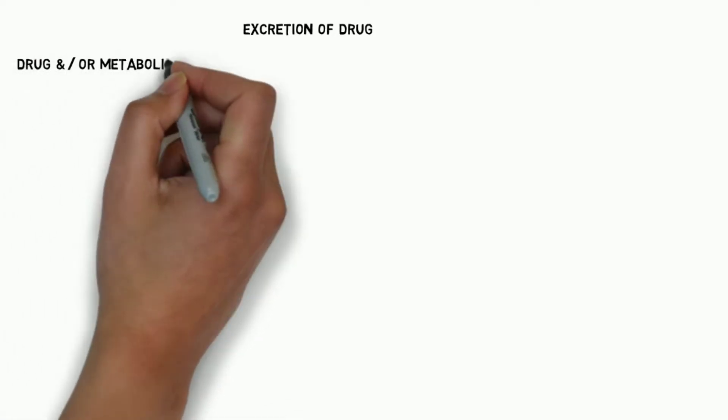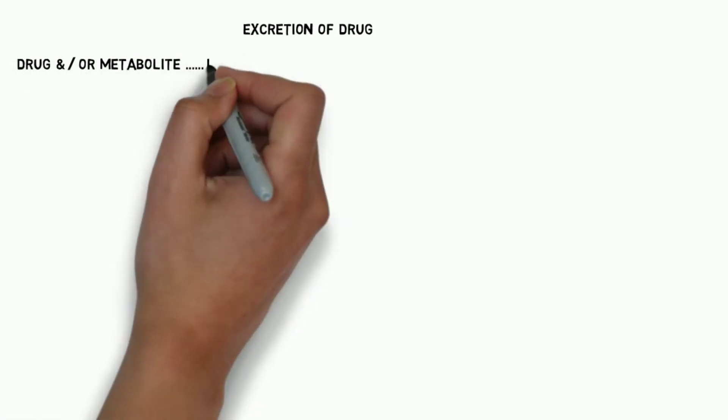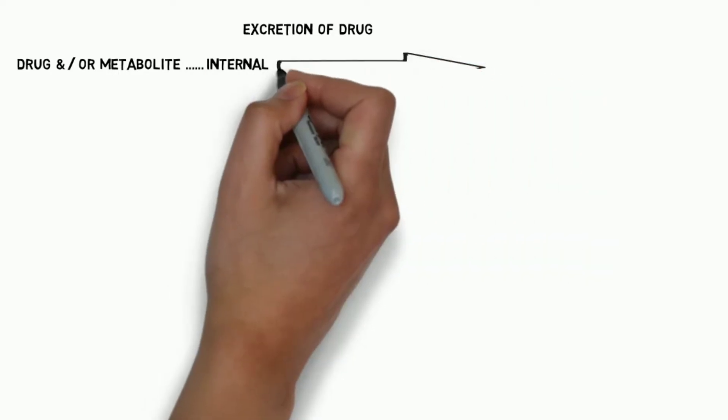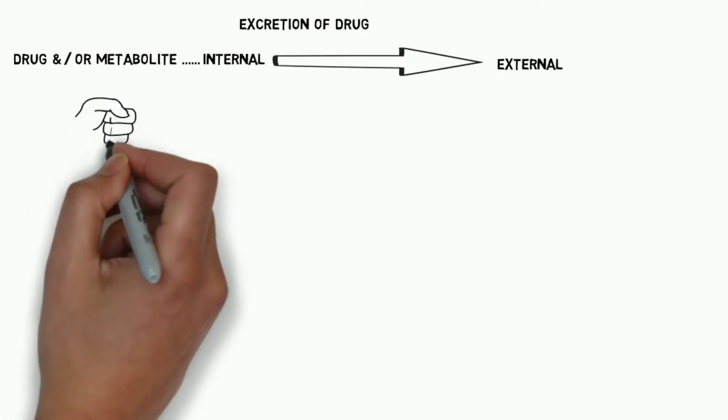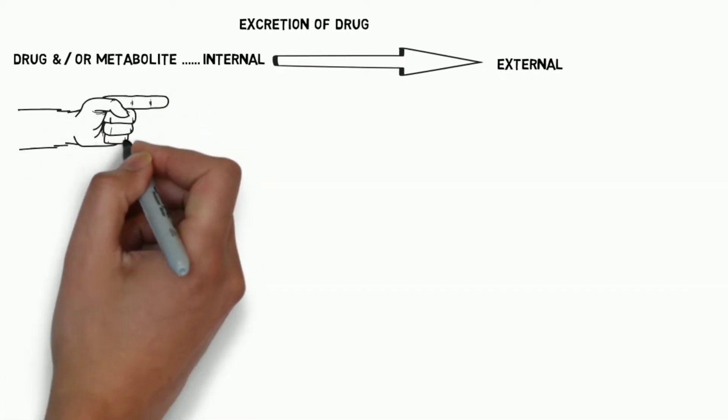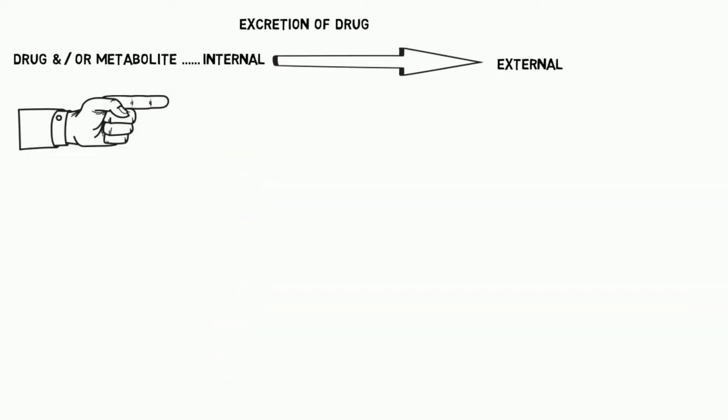What is excretion of drug? The process by which drug and/or their metabolites are irreversibly transferred from the internal environment to the external environment of the body.